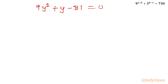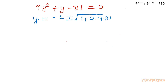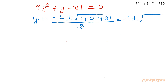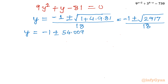Let us apply the quadratic formula: y equals minus b, so minus 1, plus or minus square root of b² minus 4ac, which gives 1 plus 4 times 9 times 81, all divided by 2a, that is 18. Checking the value: minus 1 plus or minus square root of (4 times 9 times 81 plus 1), which is square root of 2917, approximately 54.009, divided by 18.